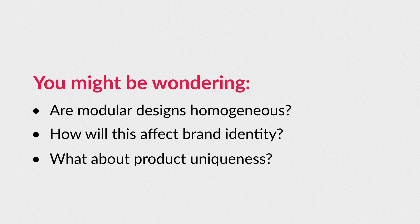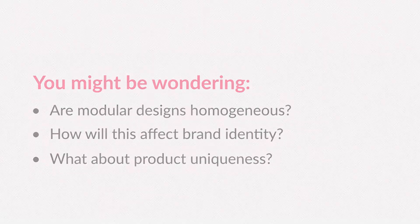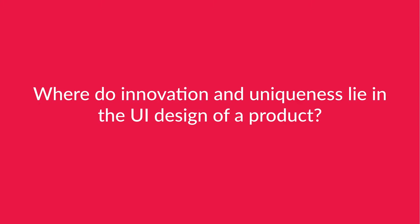While these questions are valid, they do raise an underlying question: where does innovation and uniqueness lie in the UI design of a product? It's easy to think that innovation and uniqueness lie in the way a design looks, but that's somewhat natural to think since visual design is the first thing that we see. Visual design is just one aspect. Innovation and uniqueness in product design really come from the actual value of the product and the way people experience it, which of course includes its appearance.